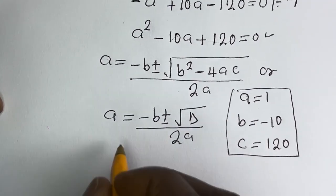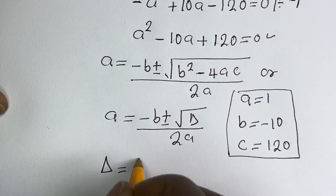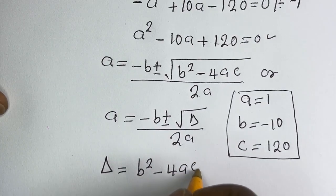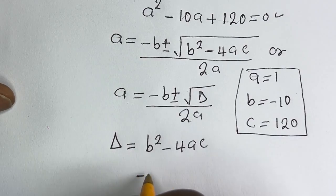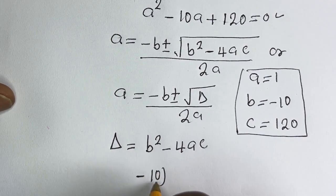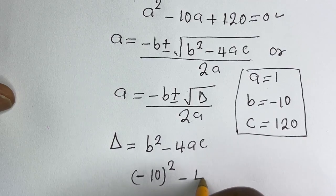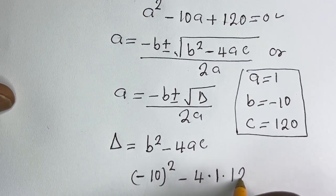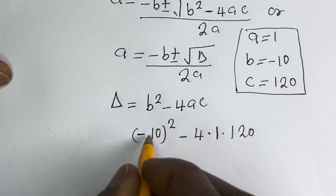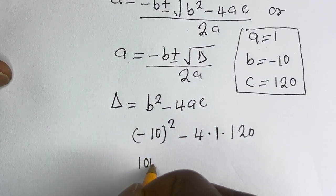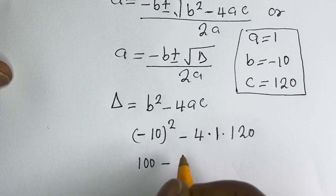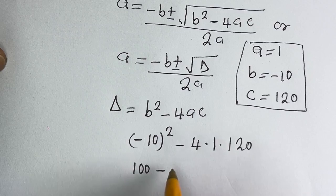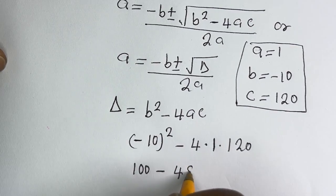The discriminant D is equal to B squared minus 4AC. This is minus 10 squared minus 4 multiplied by 1 multiplied by 120. Minus 10 squared is 100, minus 4 times 1 times 120 is 480.